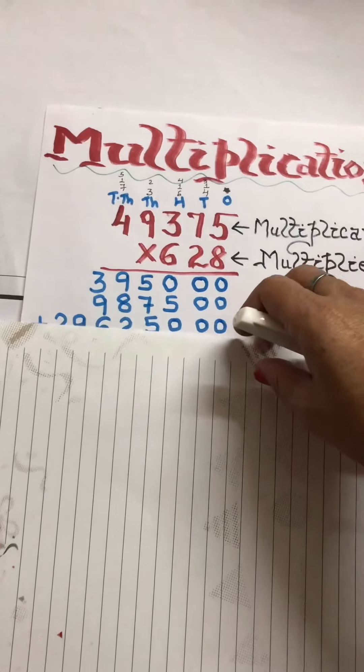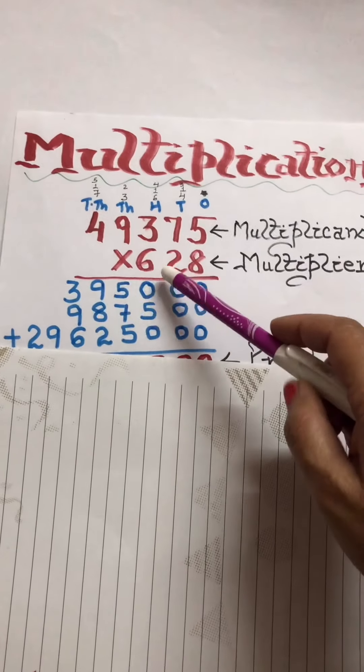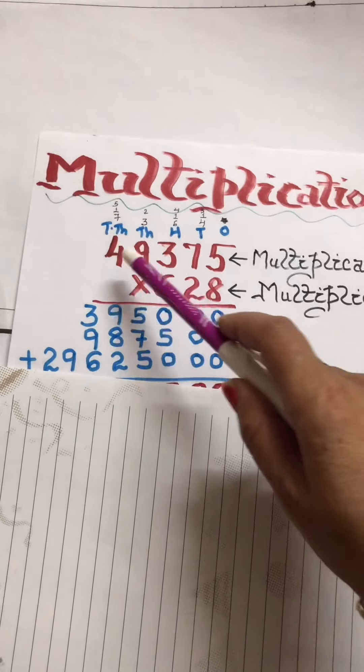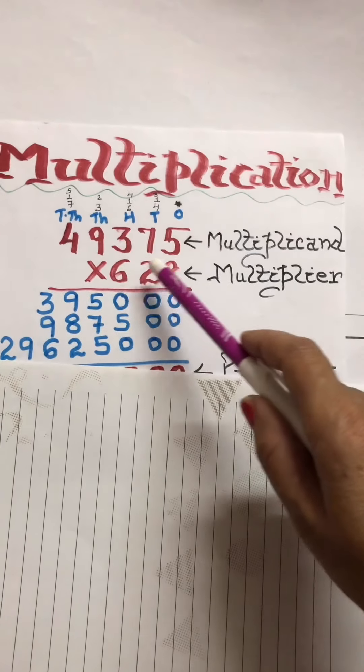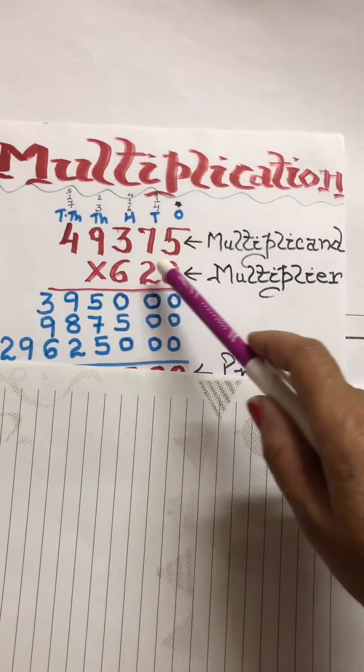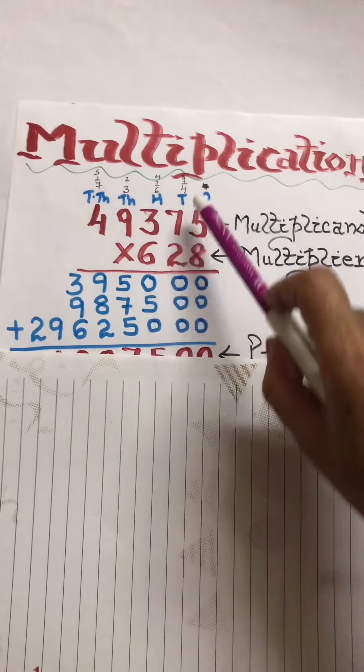Next is 6, so you have to multiply 49,375 by 600. For that, you will write 0 in the 1's column, 0 in the 10's column, and now you will multiply 49,375 by 6. 6 fives are 30, so you will write 0 in the 100's column and 3 carried over.